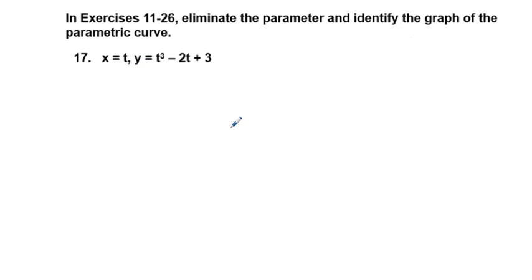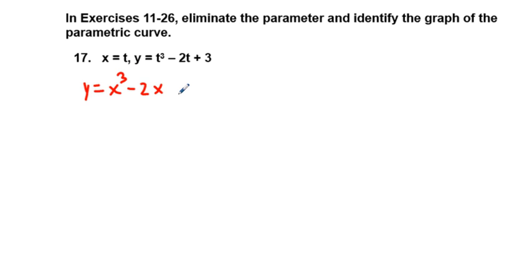Our last problem is number 17. We have x equals t and y equals t cubed minus 2t plus 3. This is pretty simple — all we have to do is replace the t in the right equation with x. So we have y equals x cubed minus 2x plus 3. That's our rectangular equation. We can put this in a graphing calculator to look at it. I'm going to press control, I, add graph.